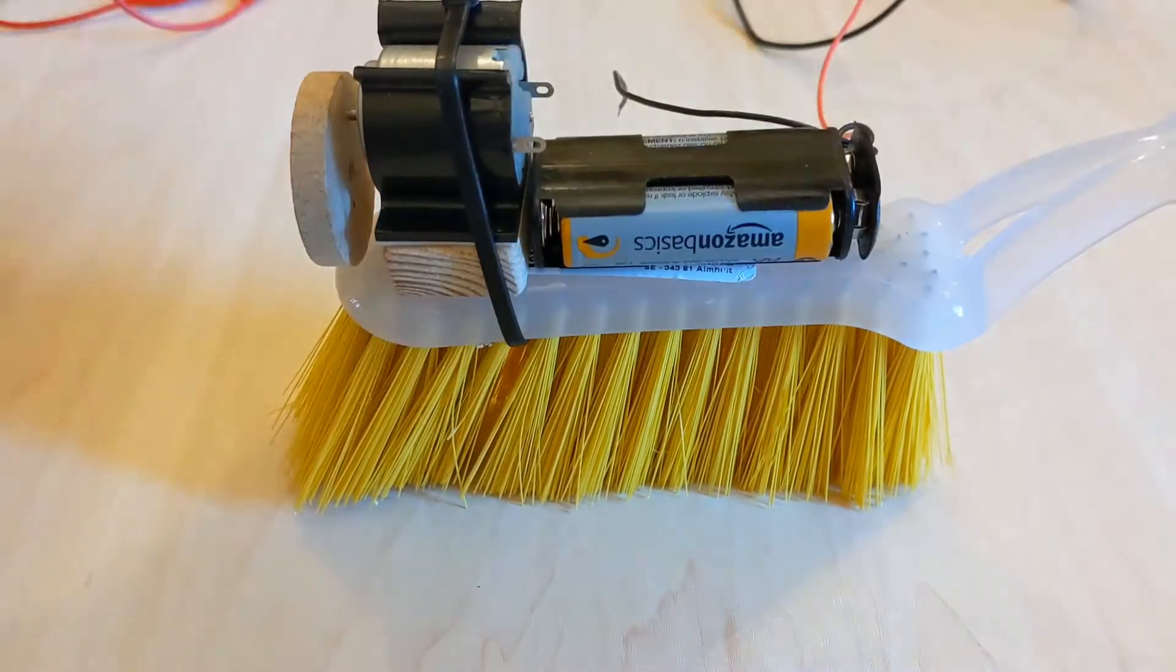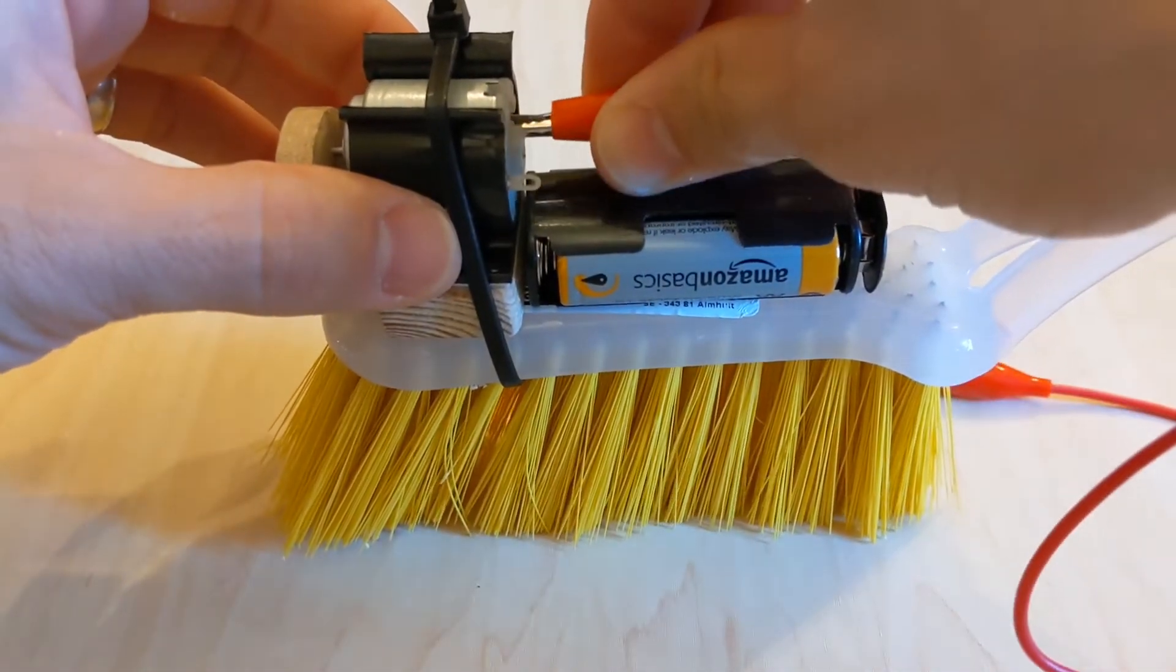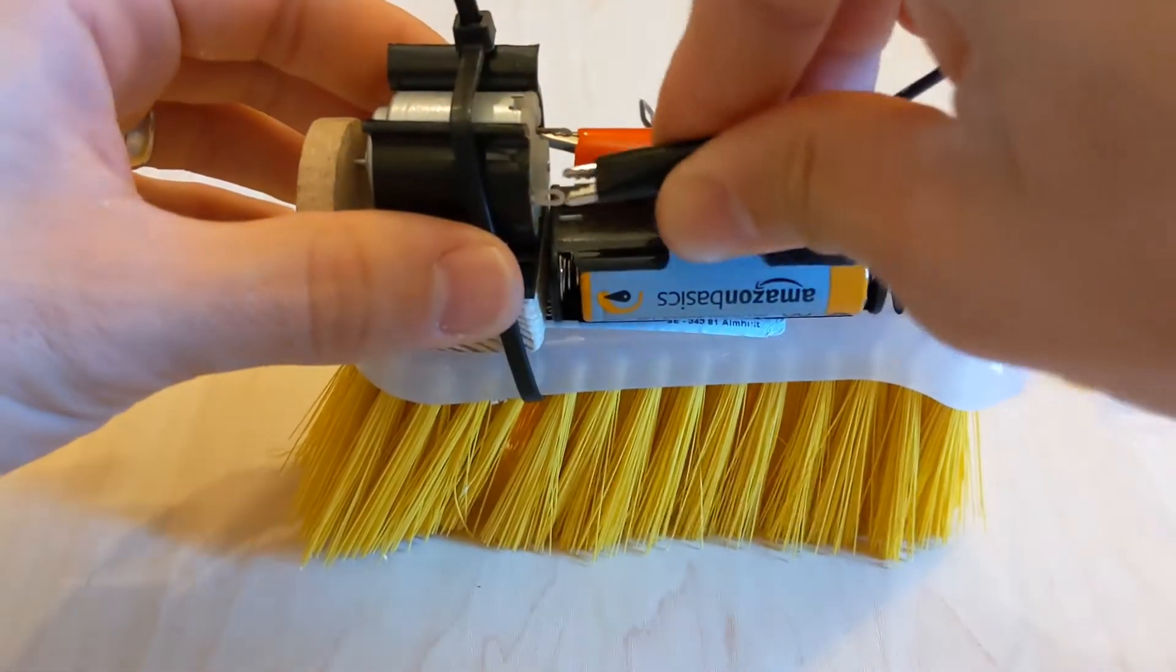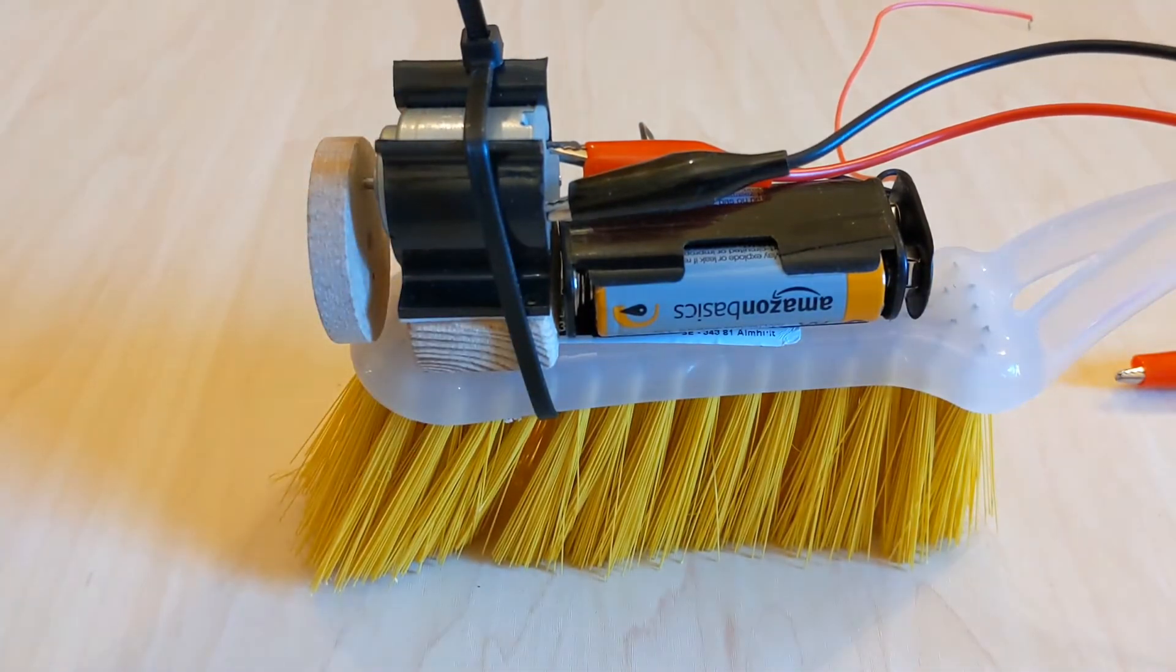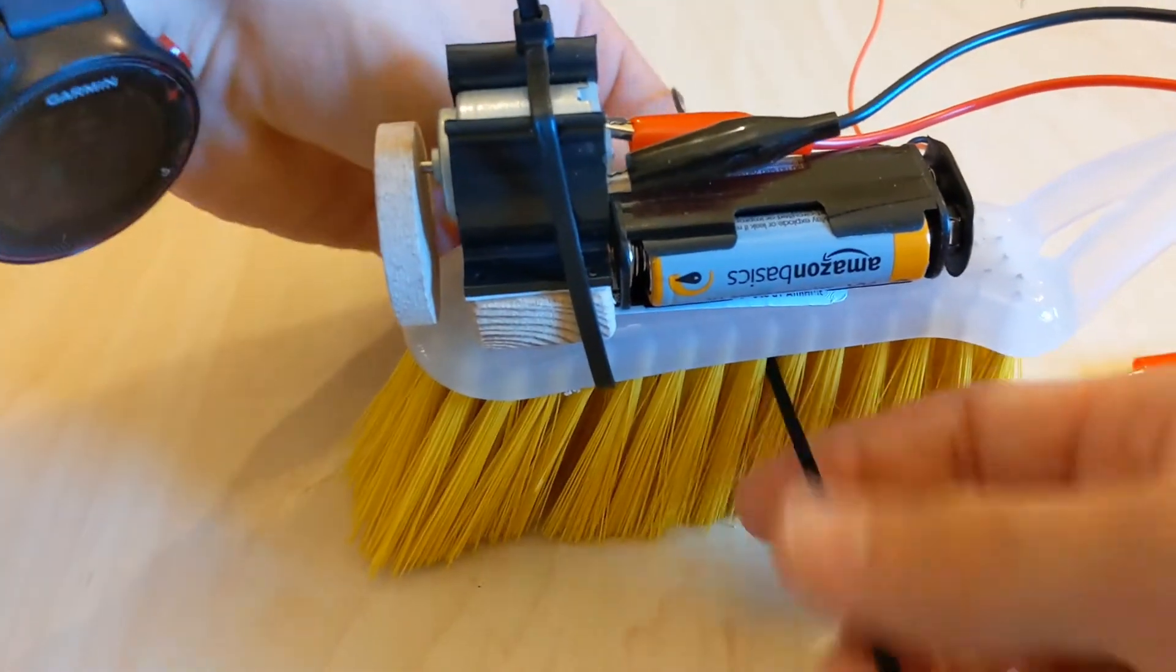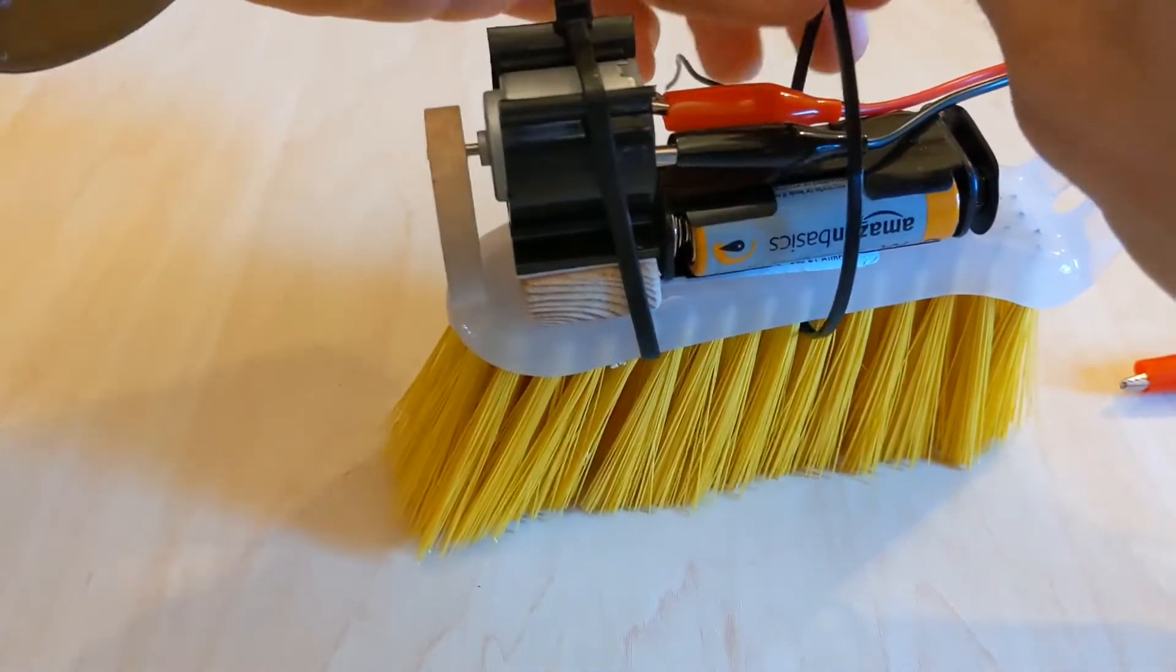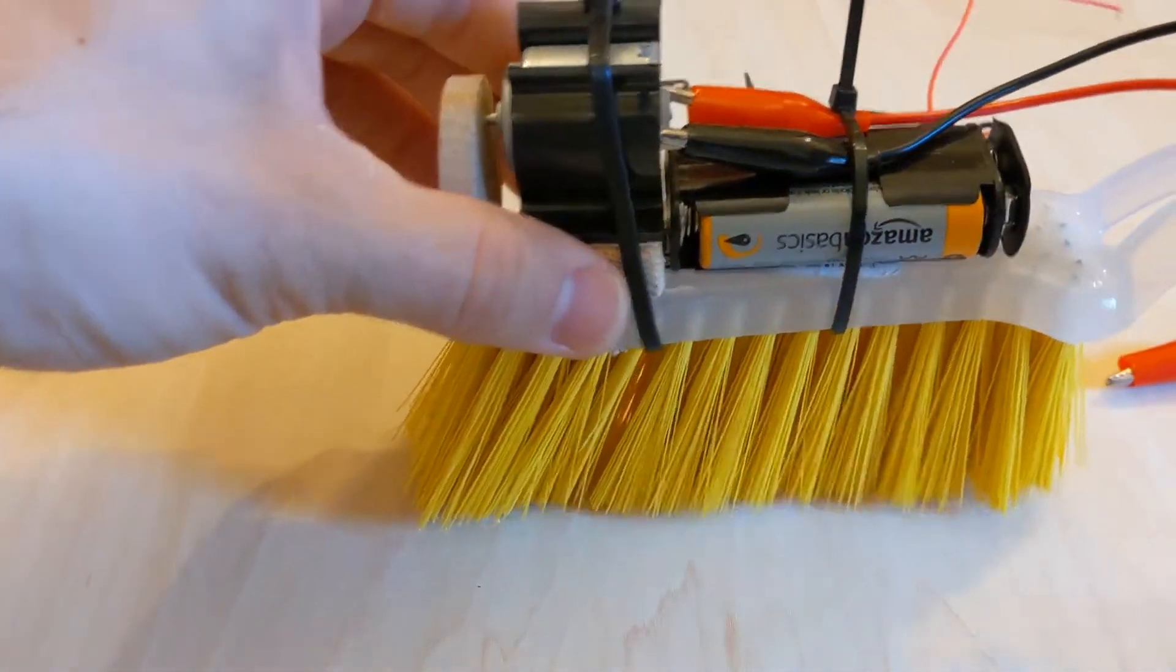Next, take the battery pack and position it on the main body of the brush. Reattach the two power wires which are going to go to the motor. Once you've done that, take one of the medium cable ties, slide it underneath the brush in the same way that you did for the motor mount, over the top, and secure both the wires and the battery pack in place.